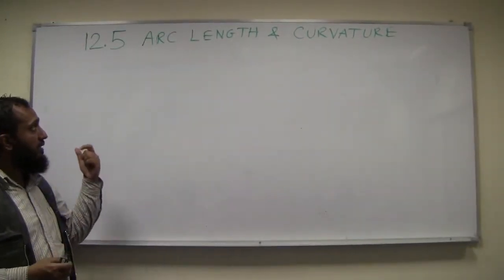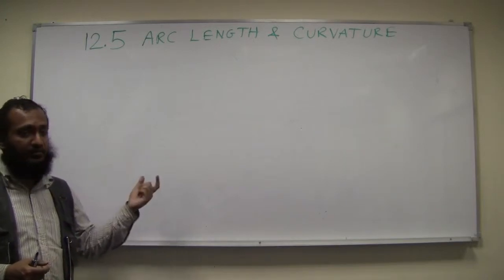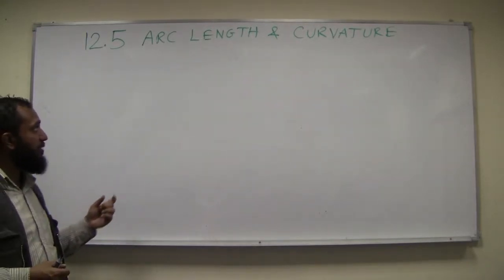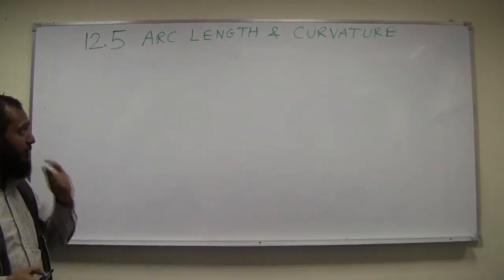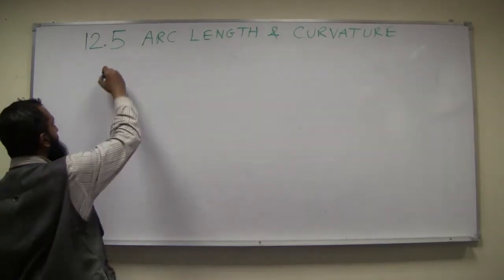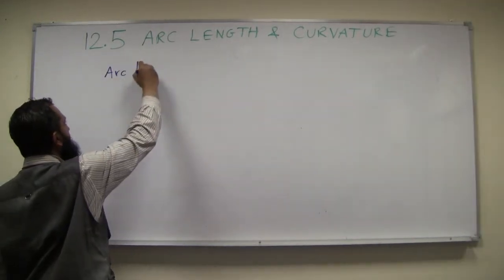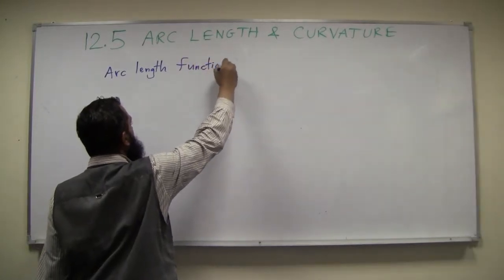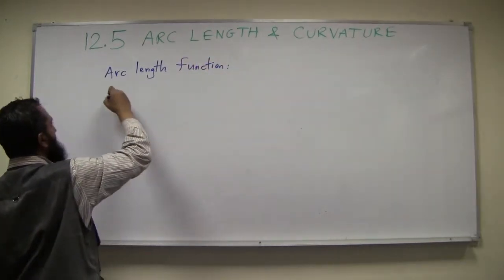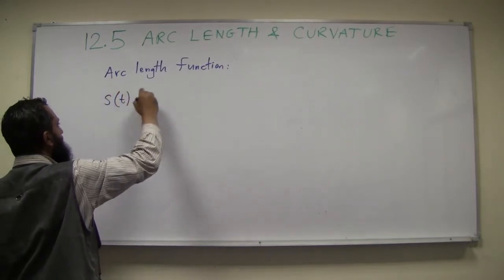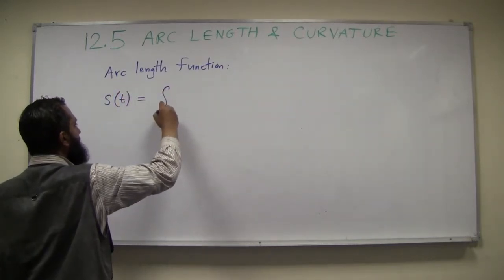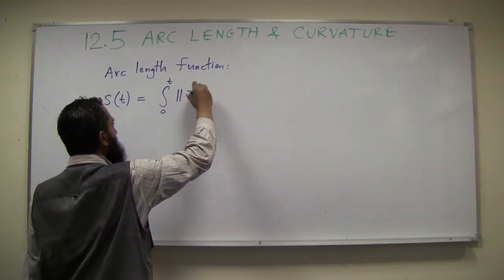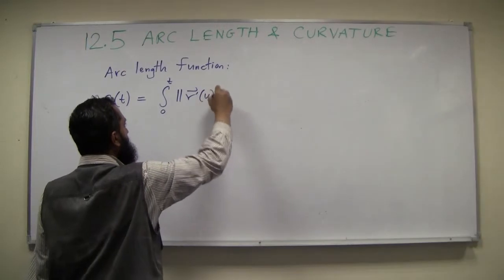Okay, so we saw that when we calculate arc length using the arc length formula, the result is going to be independent of the parameterization. That's one important thing to keep about arc length. Now what we're going to look at is, we can define what is called arc length function.